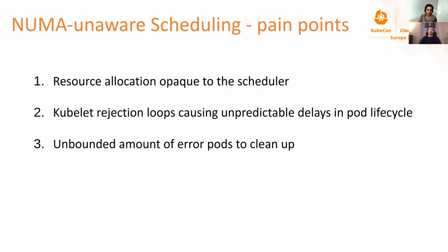The scheduler is not NUMA aware, and we have a few challenges and pain points that need to be addressed. The first is that the scheduler lacks visibility into resource availability on a per NUMA node basis. The second is that the kubelet rejection loop can cause delays in pod lifecycle — especially for low latency workloads, this can impact the SLA and the performance of the workload itself. The third is the unbounded amount of error pause pods that need to be cleaned up.